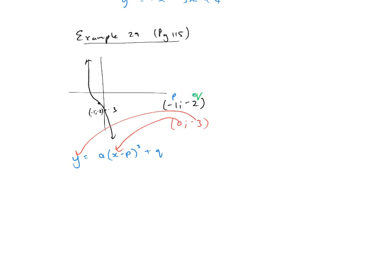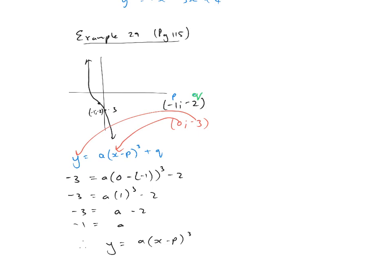Substituting: −3 = A(0 − (−1))³ + (−2) = A(1)³ − 2, so A − 2 = −3, therefore A = −1. The equation is Y = A(x − B)³ + Q = −1(x − (−1))³ − 2, which is Y = −(x + 1)³ − 2.